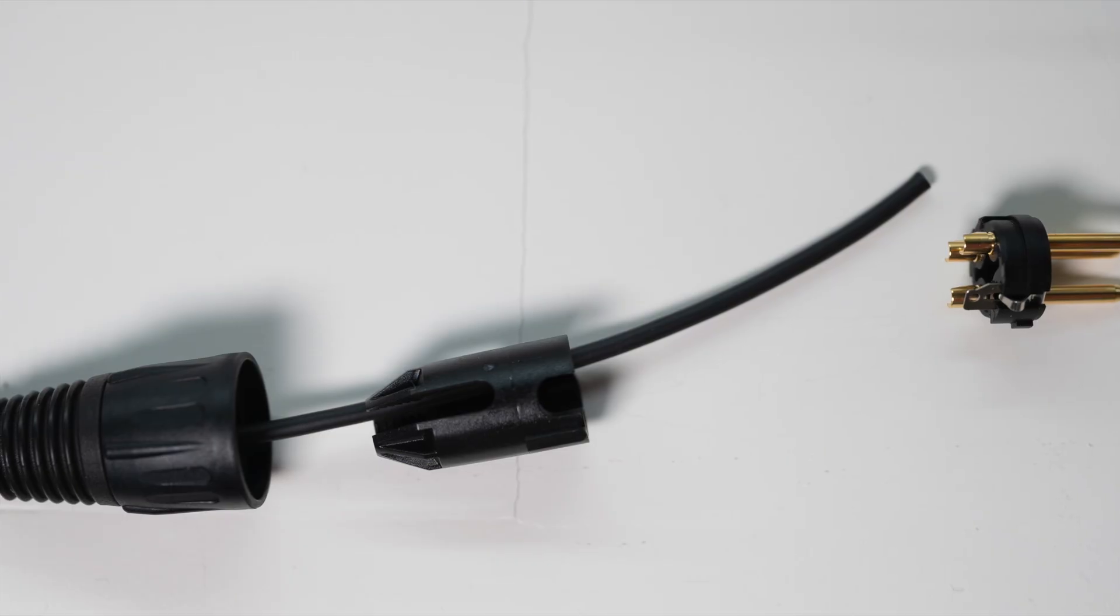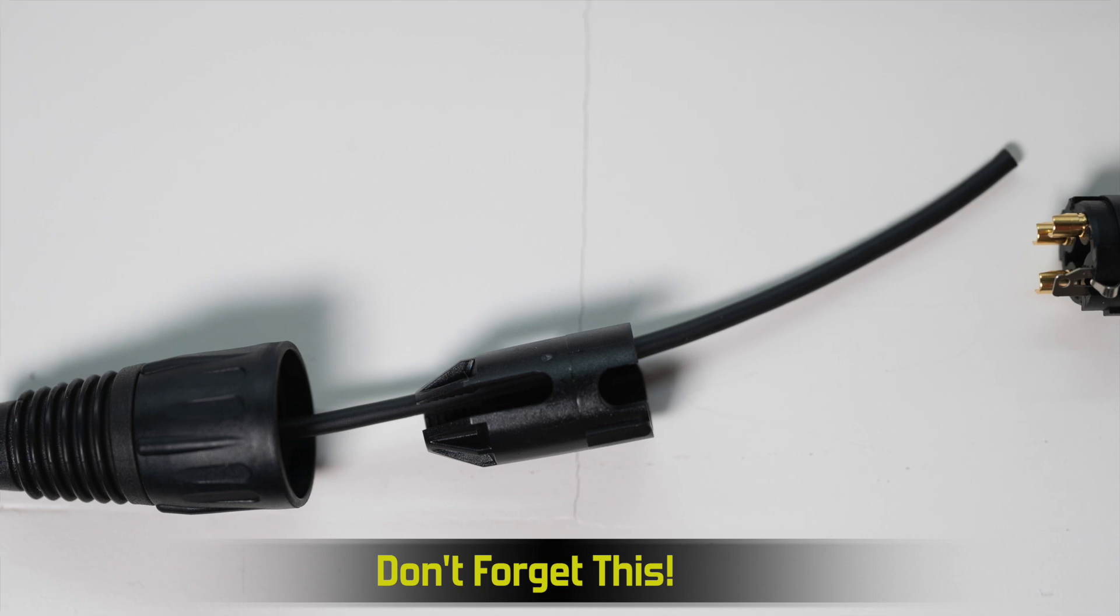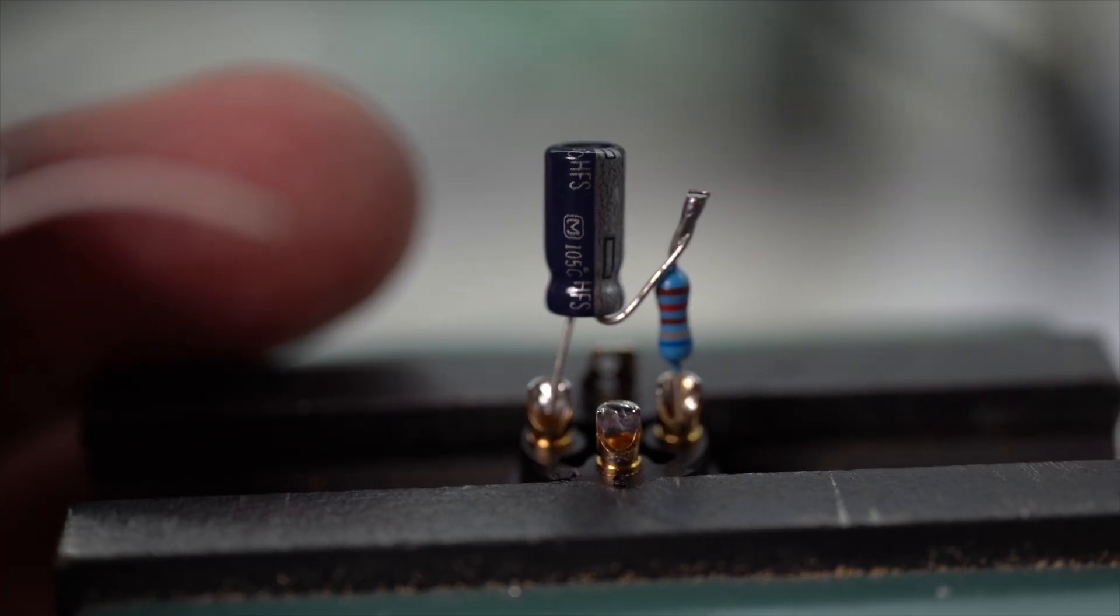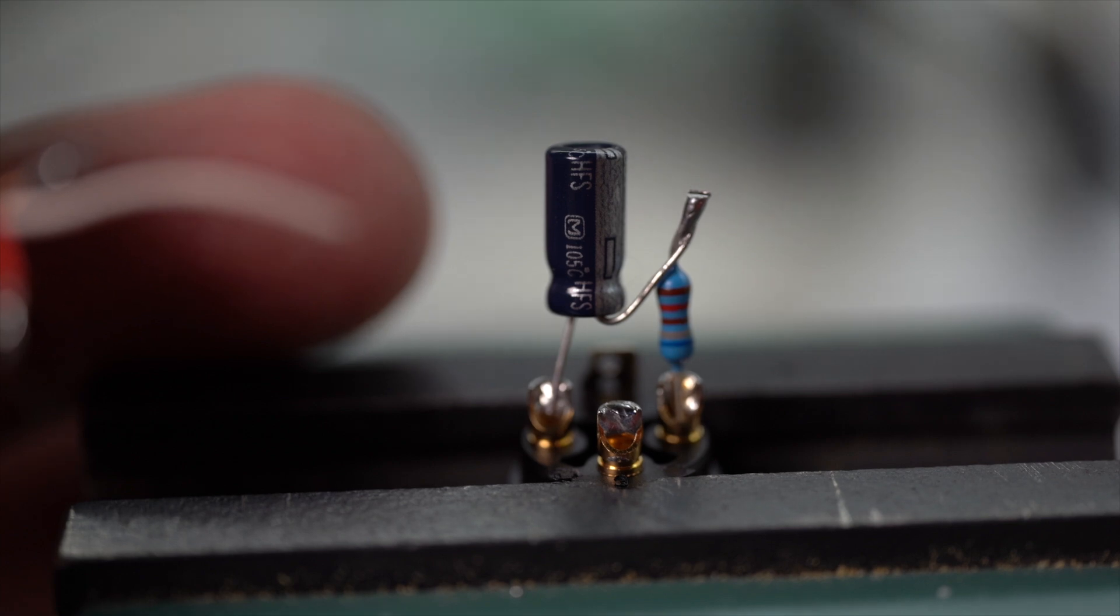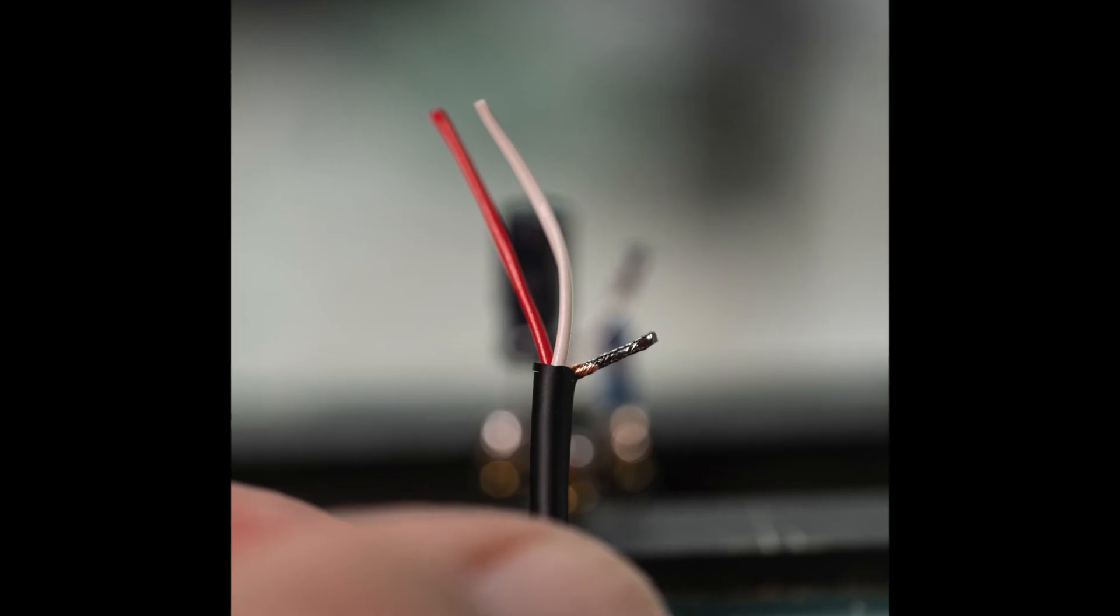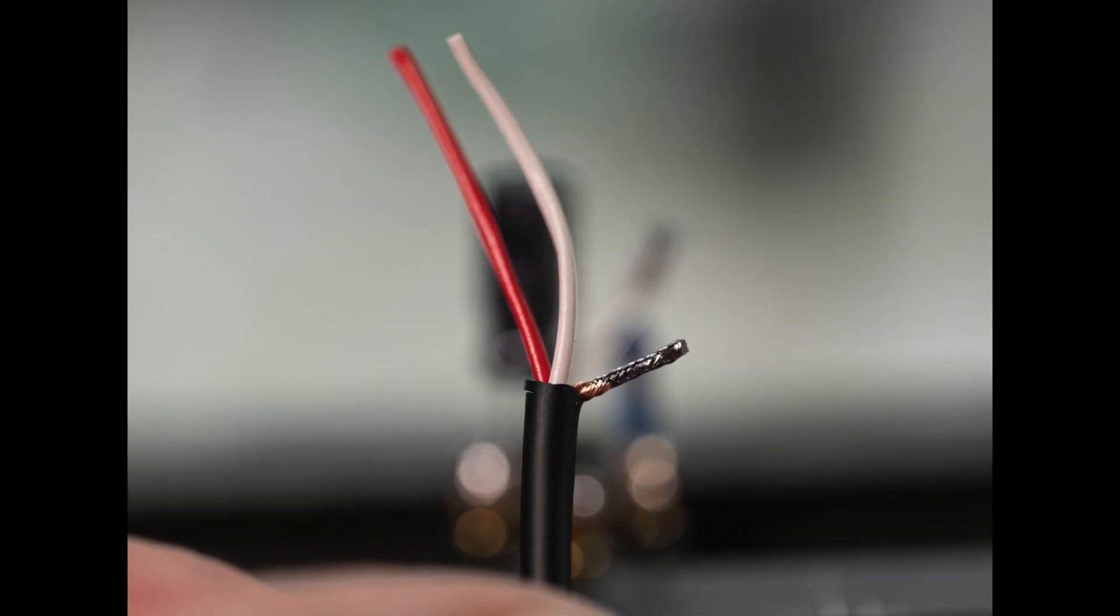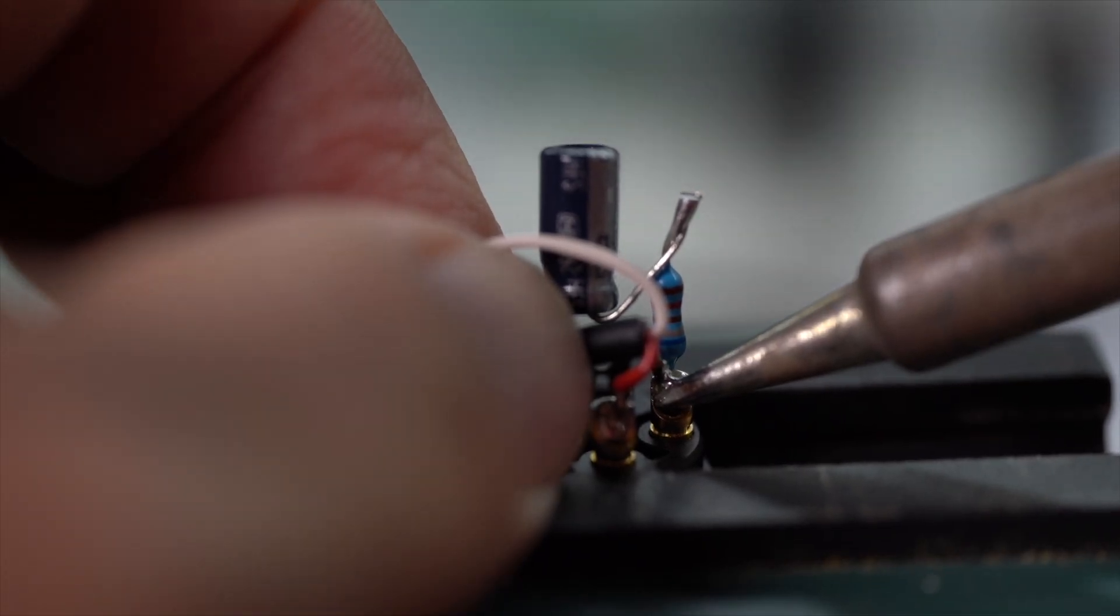Ensure that you have the XLR outer cable housing and inner plastic piece on the wire prior to continuing. Prep the wire by stripping back about three quarters of an inch of the outer jacket. Twist the shield together, tin the shield, and then trim it back with enough exposed to solder to pin one on the XLR.